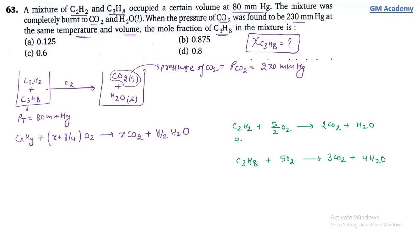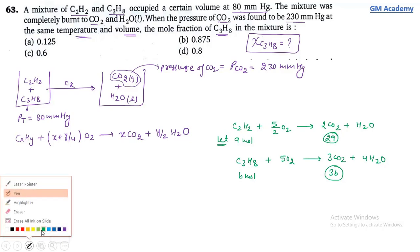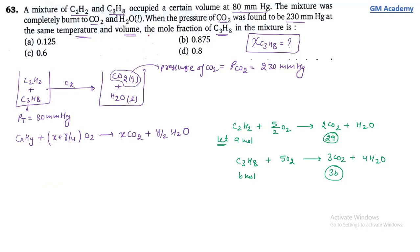Let C₂H₂ = A mol and C₃H₈ = B mol. CO₂ produced = 2A + 3B mol. Since temperature and volume are constant, pressure is directly proportional to number of moles (from PV = nRT).